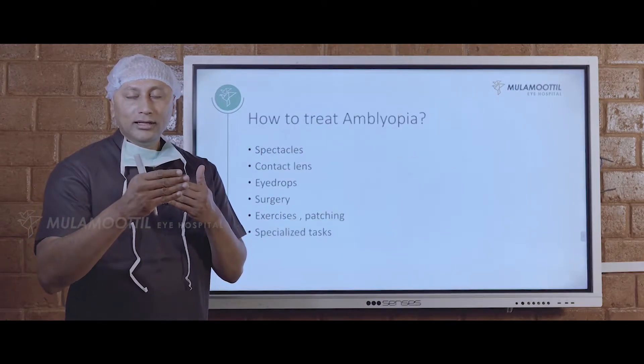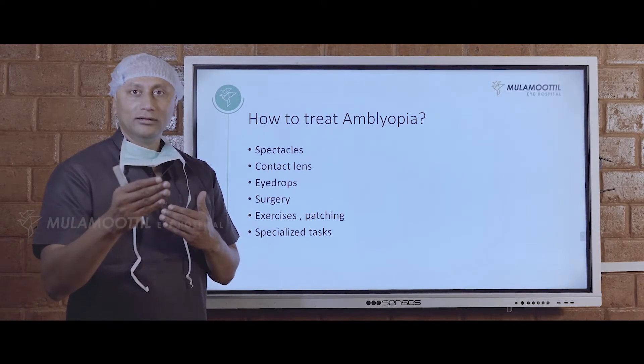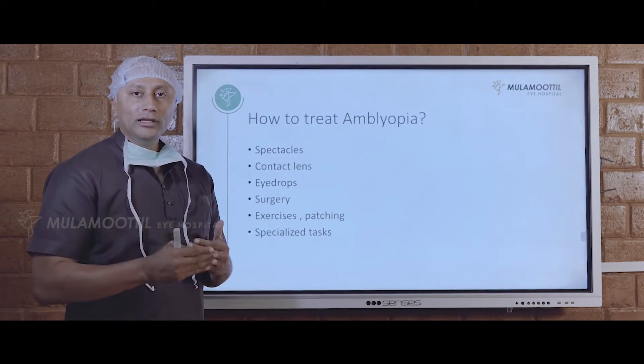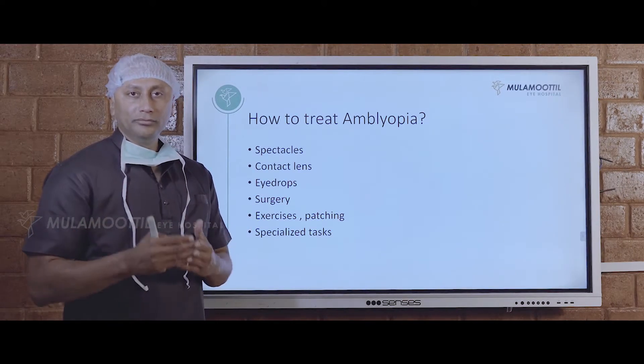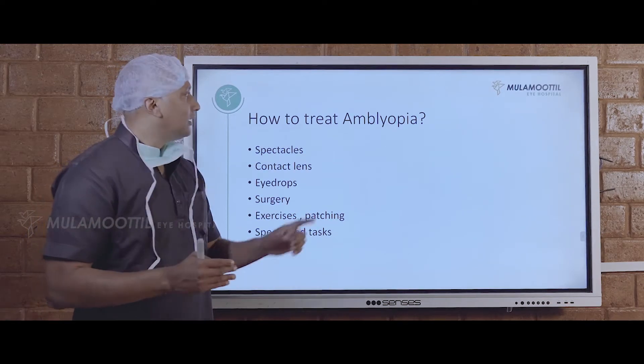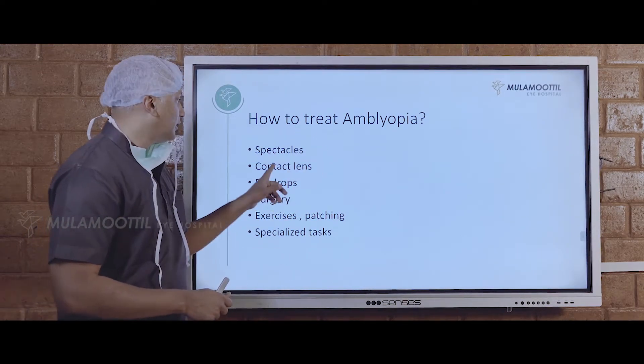In three dimensions, because the world is three dimensional, we need both the eyes to function together. If both eyes are not functioning together, it is called amblyopia. How do we treat amblyopia?